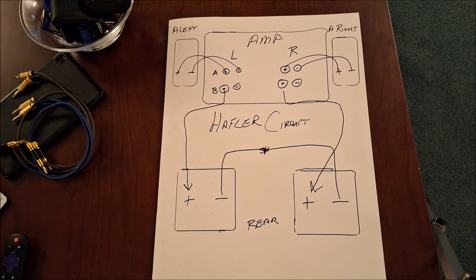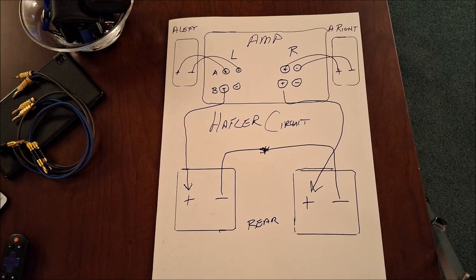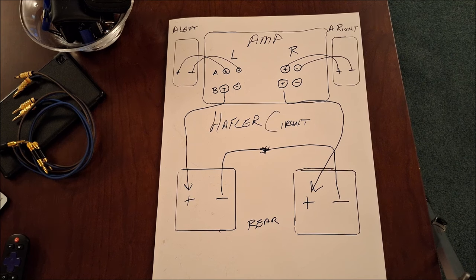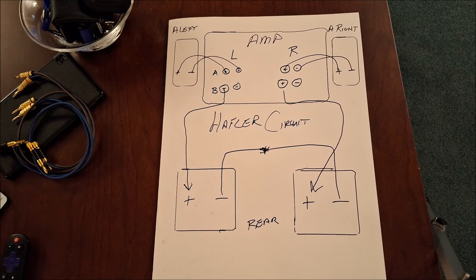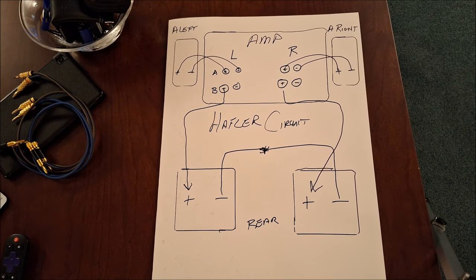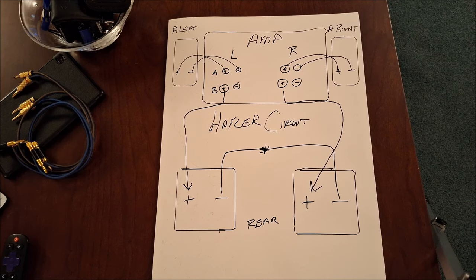This was also part of the basis of Dyna-quad that you used to see back in the 70s when quad was kind of becoming a thing. Marantz, Pioneer, Sansui — they all had a kind of pseudo-quad wiring option on their amplifiers, and basically what it was is this. They were doing it at line level and could add a volume control.